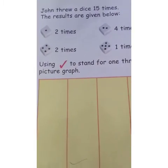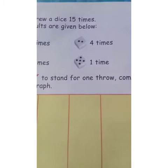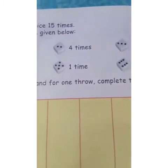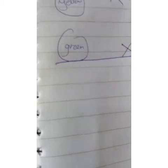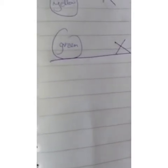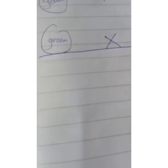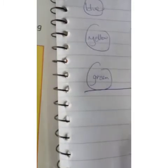Now on this page, John threw a dice fifteen times. You know what a dice is. The numbers that came were: one — 2 times, two — 4 times, four — 2 times, and five — 1 time. Using a tick to stand for one throw, complete the picture graph. Let's make a rough one — columns for 1, 2, 3, 4, 5, and 6.